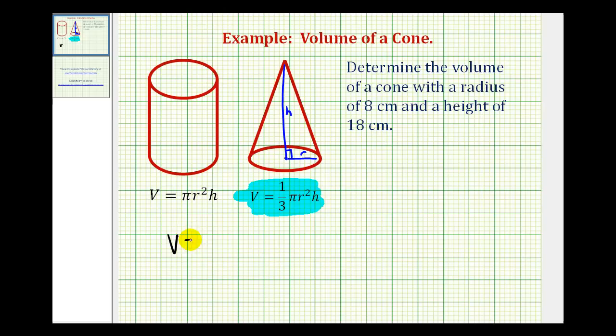So we'd have the volume is equal to one-third times pi, times the length of the radius squared, which would be eight centimeters squared. Notice how I am leaving the units in the formula, and I'll show you why in a minute. And the height would be 18 centimeters.